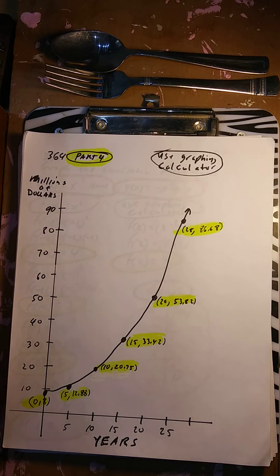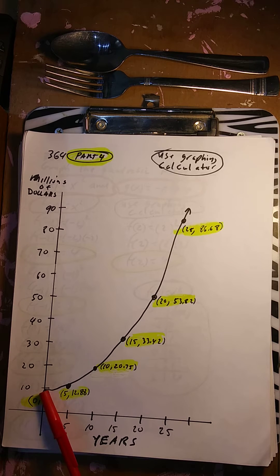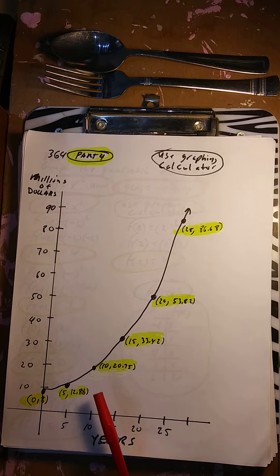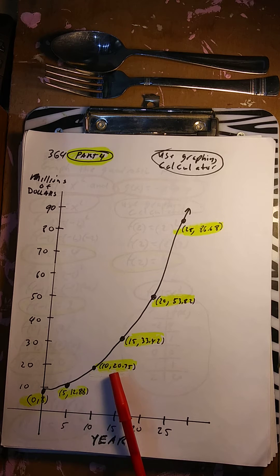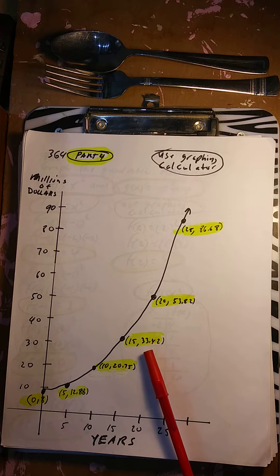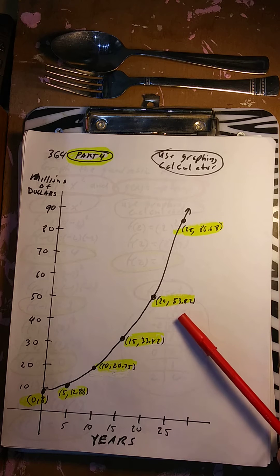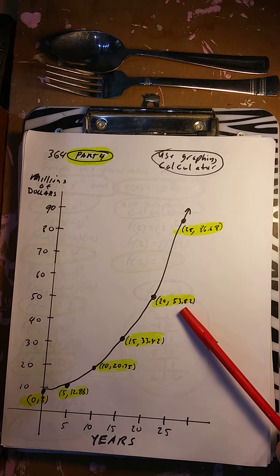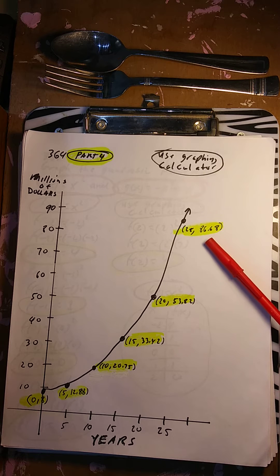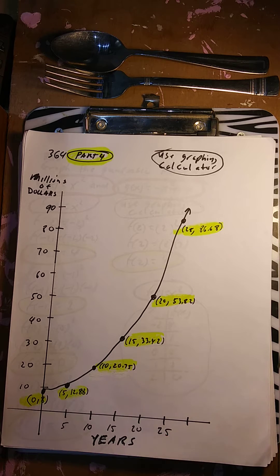Part 4 — graph it. At 0, it's $8 million — that's the initial value. Then 5 years later it's worth $12.88 million. 10 years later, $20.75 million. 15 years later, $33.42 million. 20 years later, $53.82 million. And 25 years later, Aiden's house is worth $86.68 million. So it's a good investment.